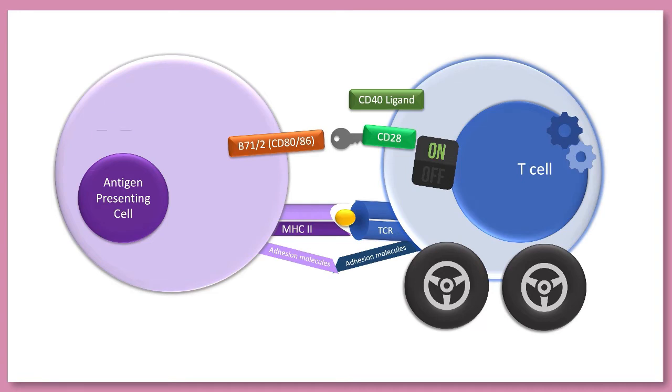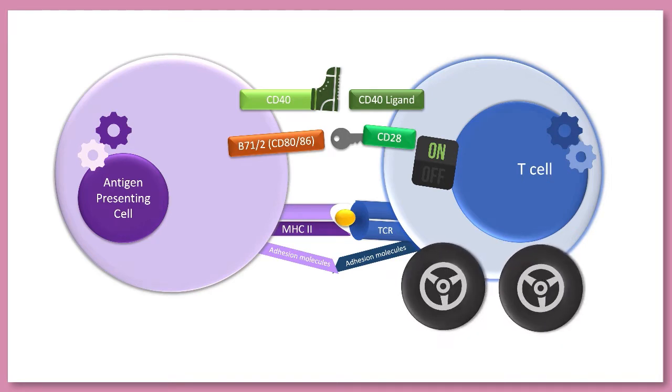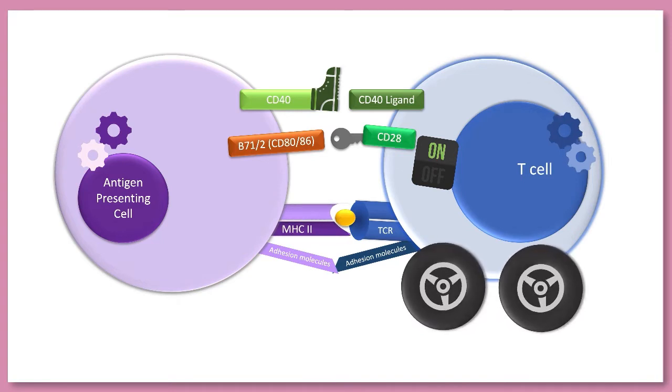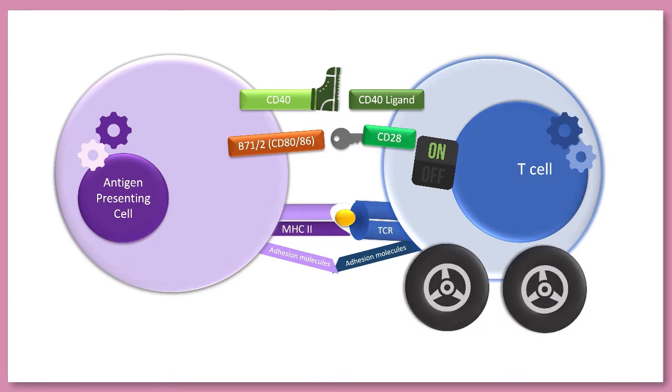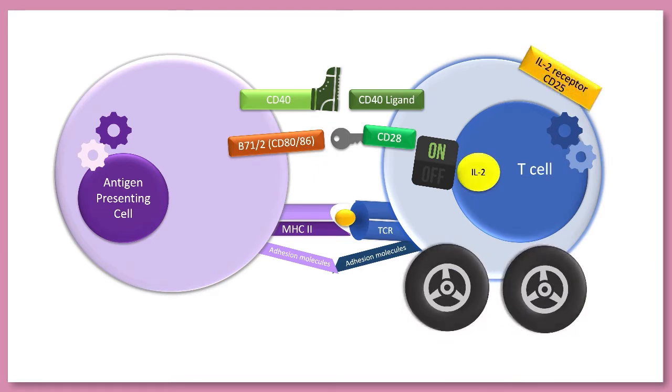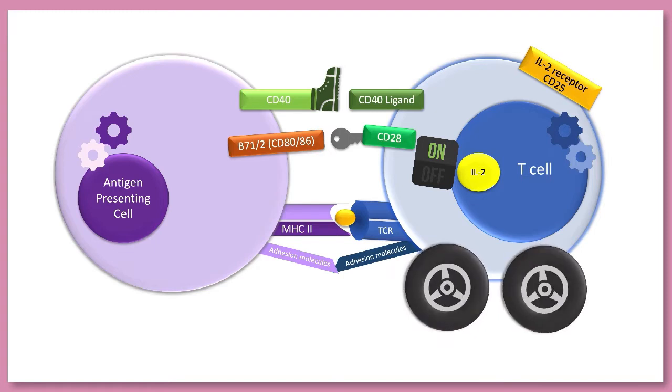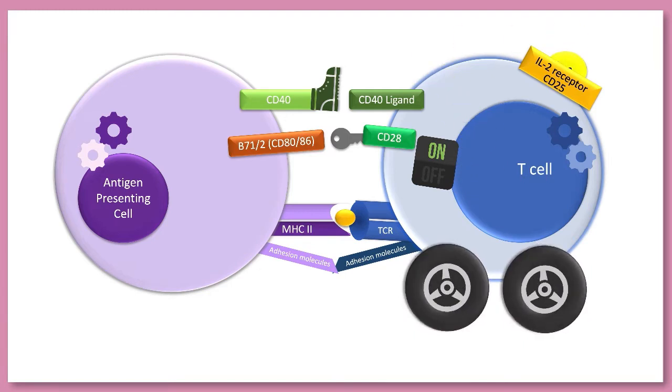This also causes a change within the antigen presenting cell, which ramps up antigen presentation and places lots of CD40 molecules on the surface. These CD40 molecules press on those CD40 ligands, the T cell accelerators, and the T cell is now very much up and running. Meanwhile, inside the now activated T cell, there are stimulatory pathways happening, which increase the production of interleukin-2 and its receptor. Remember interleukin-2 is to the T cell what cups of coffee are to me. The T cell is making its own fuel for its own proliferation.